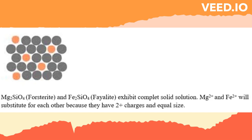For example, Magnesium 2+ (forsterite) substituting for Iron 2+ (fayalite) is a complete solid solution, since both magnesium and iron have a charge of 2+ and they are equal in size.